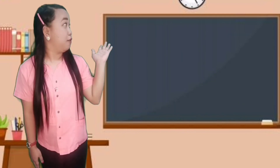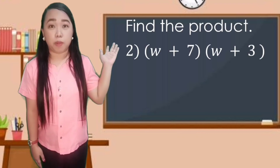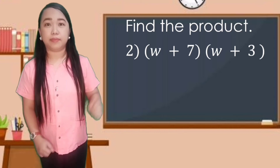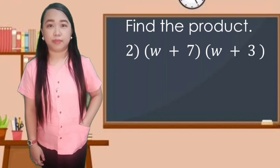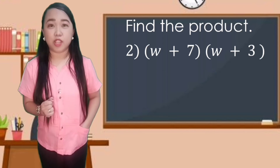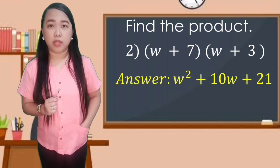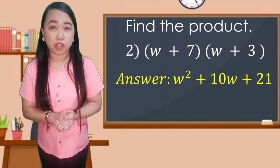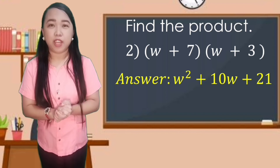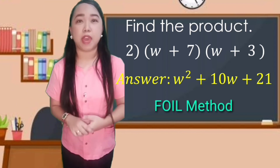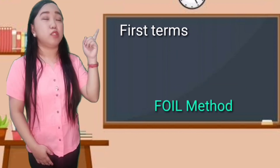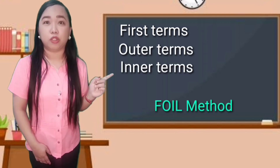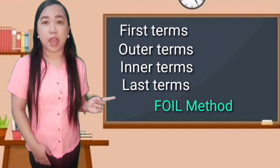For the second given, we have the quantity of w plus 7 multiplied by the quantity of w plus 3. The answer is w squared plus 10w plus 21. You get the product by using the FOIL method — F stands for the first terms, O for outer terms, I for inner terms, and L for the last terms.